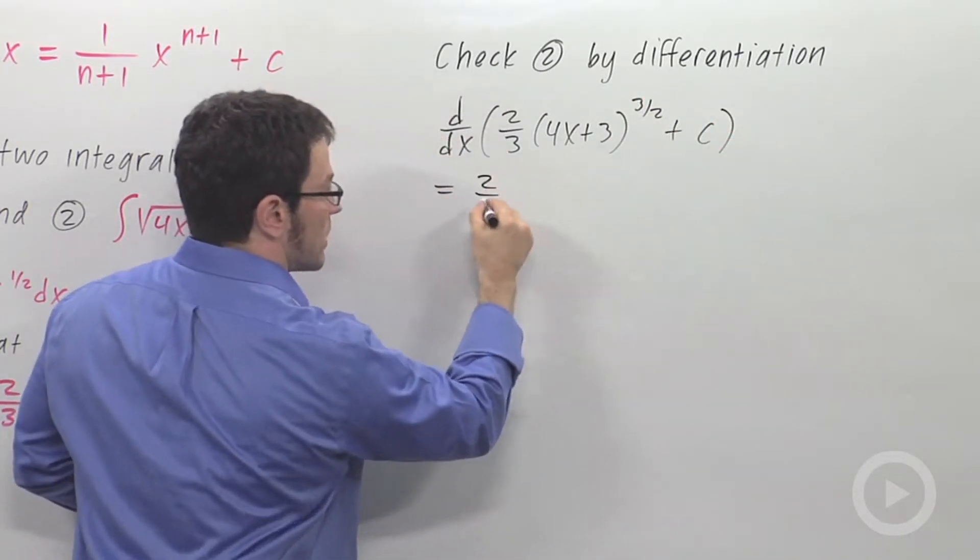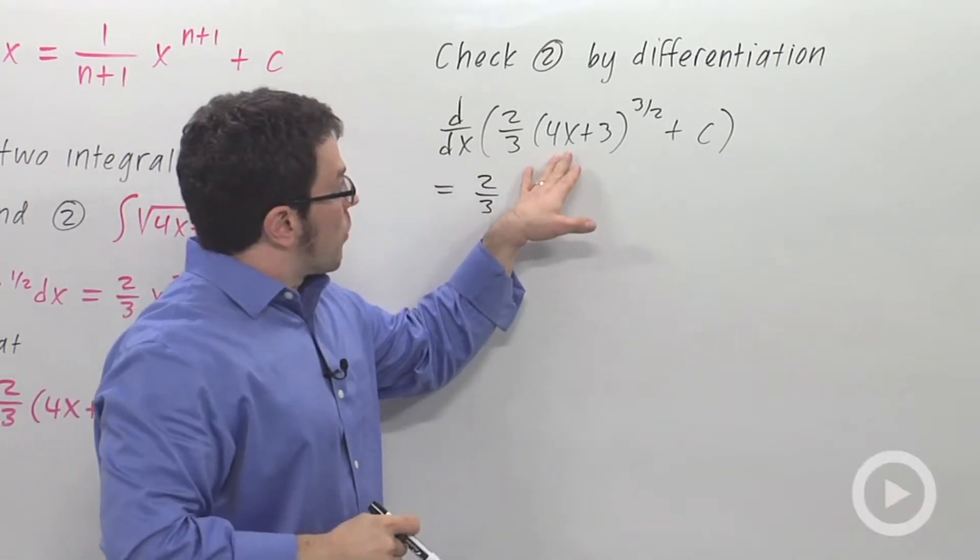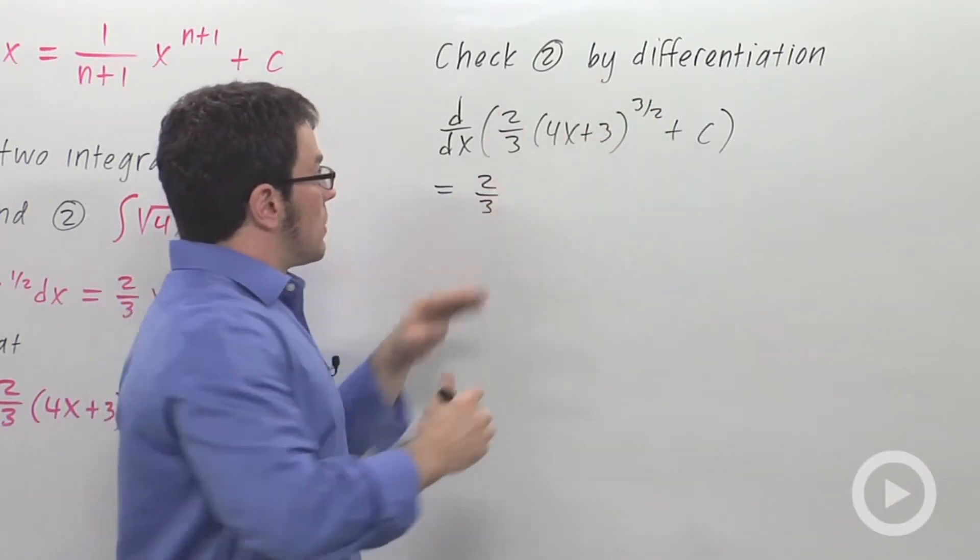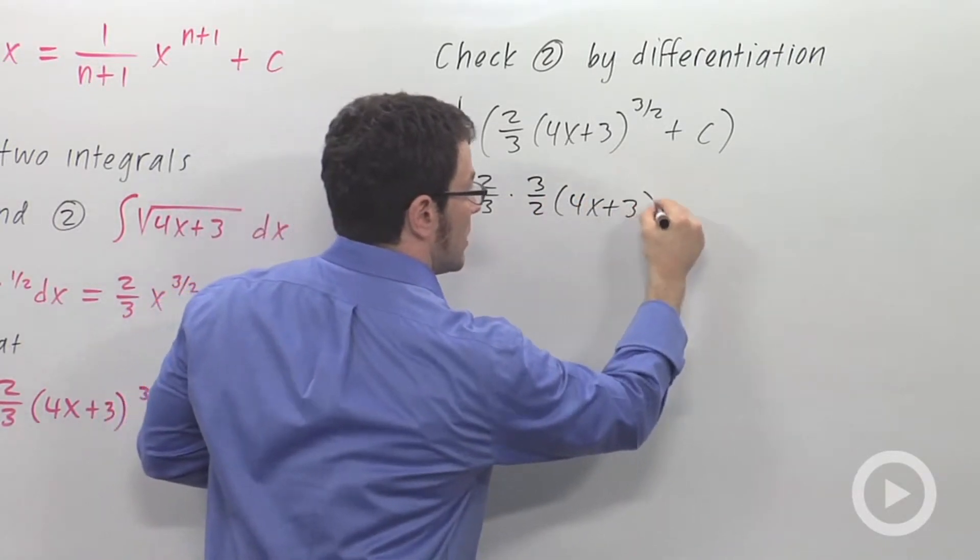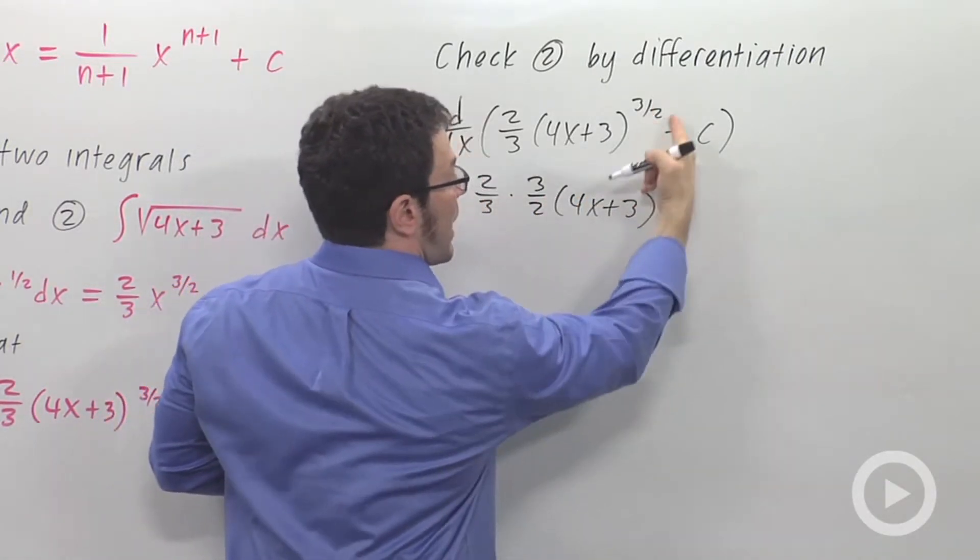The 2 thirds will come out in front, and then 4x plus 3 to the 3 halves. The 3 halves will come out, and I have 4x plus 3 to the 1 half, right? This power minus 1.